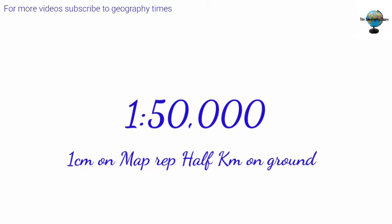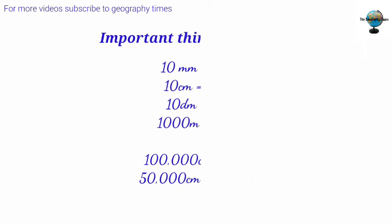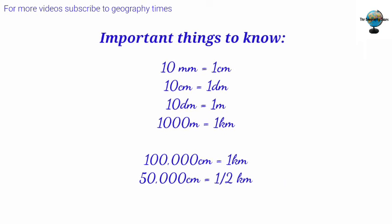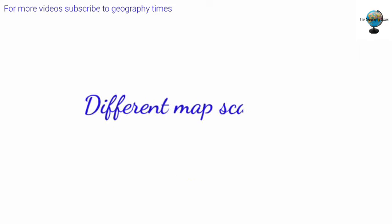Before you start exploring maps, you have to know that 10 millimeters equals one centimeter, 10 centimeters equals one decimeter, and 10 decimeters equals one meter. One thousand meters equals one kilometer. Therefore, 100,000 centimeters equals one kilometer, and 50,000 centimeters equals half a kilometer. After knowing this, you will be able to understand the different map scales.